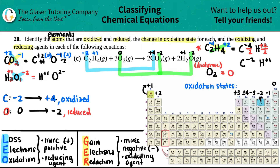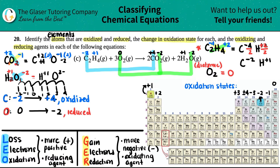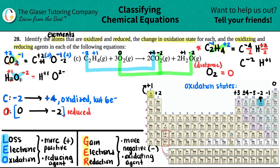Think of it as a number line: how many jumps from negative two to positive four? That's six jumps, so each carbon lost six electrons. Since oxidation is loss of electrons, carbon lost six electrons. For oxygen, from zero to negative two is two jumps, and since reduction is gaining electrons, each oxygen gained two electrons.